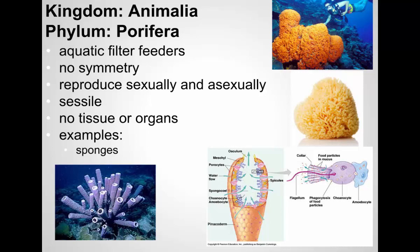Starting with Porifera — these are the sponges. They're filter feeders, aquatic, and have asymmetry — just sort of shaped randomly. They're sessile; they don't move from place to place. They can reproduce asexually by splitting off, or they can reproduce sexually. They don't have tissues or organs — they're basically just a collection of individual cells, the very simplest level of organization. They come in a wide variety of shapes, colors, and sizes. They take water in through their pores, and as they filter it out, they extract little bits of food for nutrition.